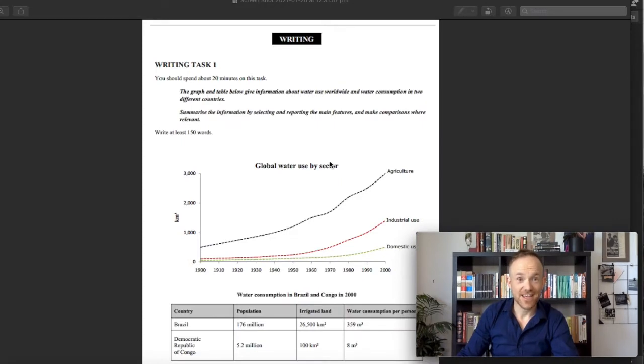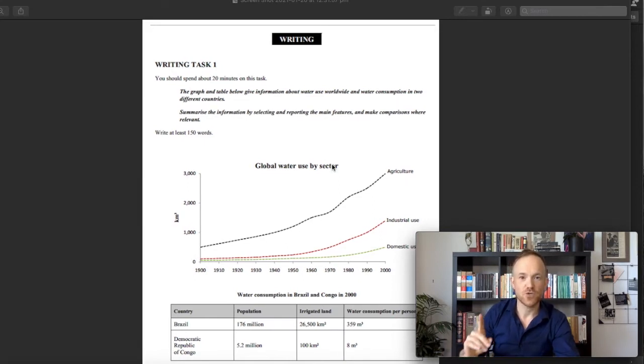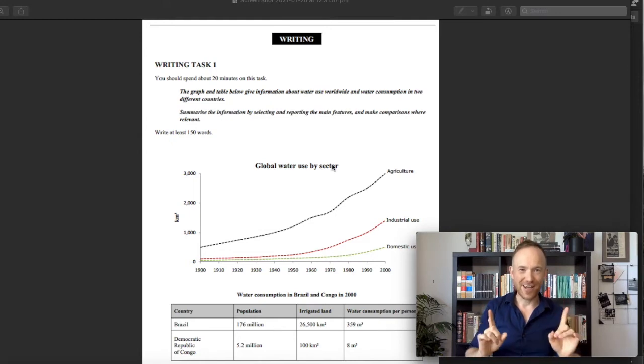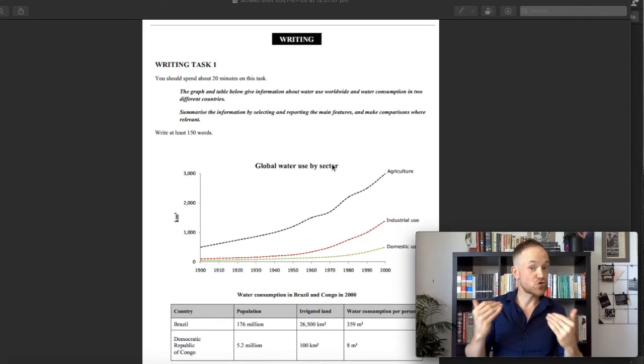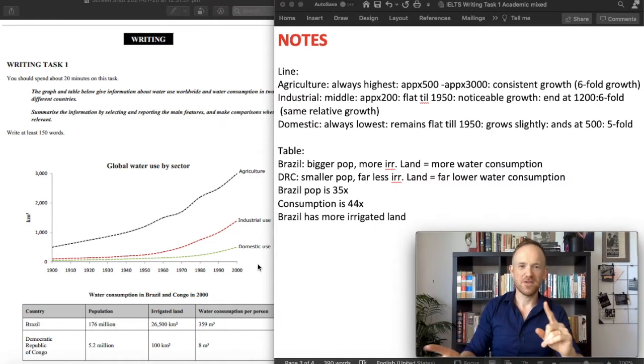Now let's take a look at today's task. As I said, we've got a mixed graph task. Let's read this together. The graph and table below give information about water use worldwide and water consumption in two different countries. Summarize the information by selecting and reporting the main features and make comparisons where relevant. So right now, I want you to take five minutes and I want you to analyze the data here. Make your notes. Remember, think about things that double, maybe things that triple, maybe things that decrease and how much they decrease. Now pardon me, I've moved things around. Let's take a look at the notes that I have made.